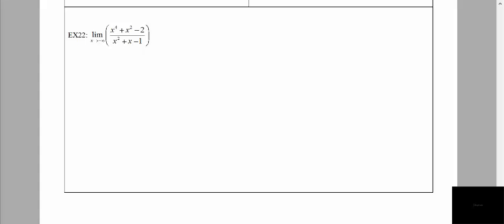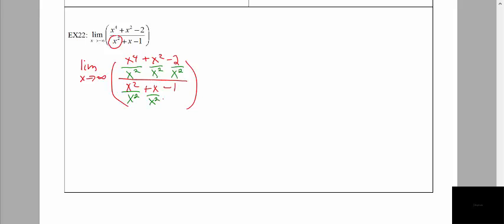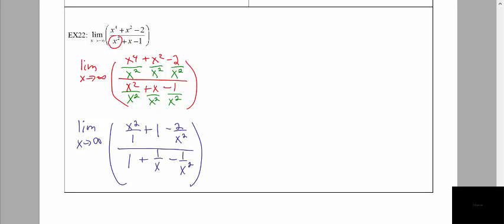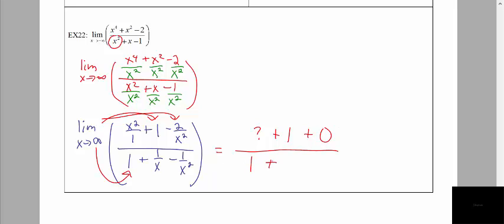Our last example asks us to evaluate the limit as x approaches negative infinity. We identify the largest power of x in the denominator as x squared, divide each term by x squared, reduce the fractions, and begin evaluating the limit. Skipping the first term momentarily, we get 1 for one term and 0 for the last term by the theorem. In the denominator we get 1 plus 0 plus 0.